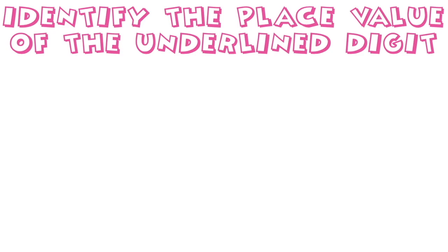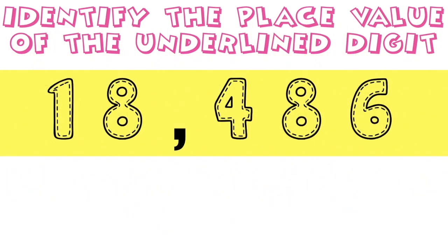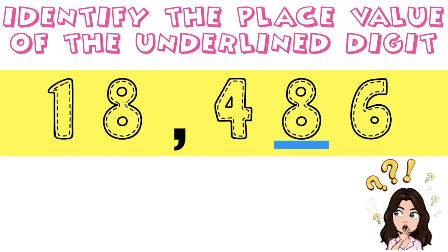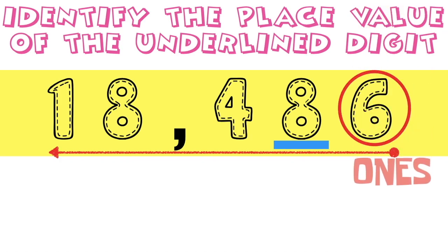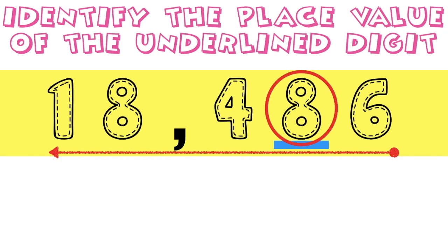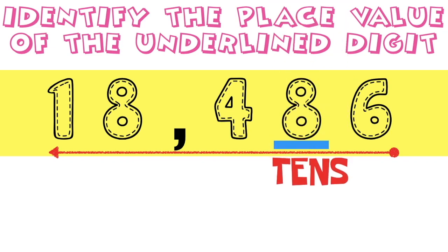How about if we have 18,486? Again, children, in identifying the place value, you are going to start from the rightmost digit going to the leftmost digit. Digit 6 is ones. So what is digit 8? What is the place value of digit 8? Very good! That is tens place!